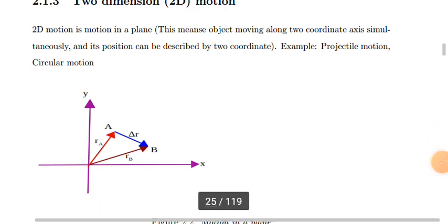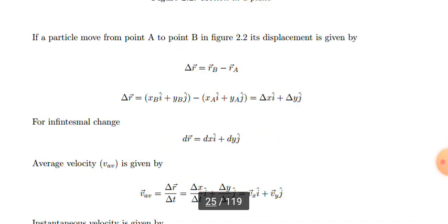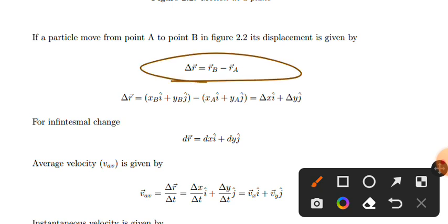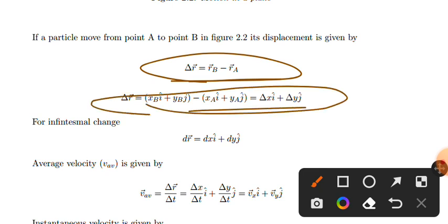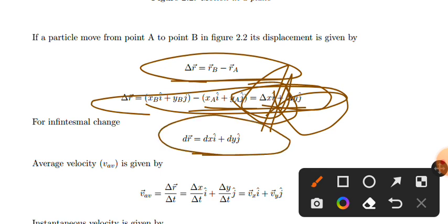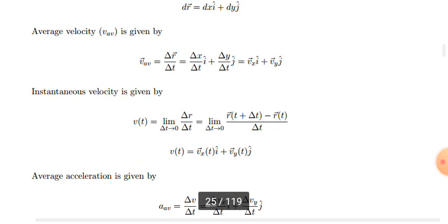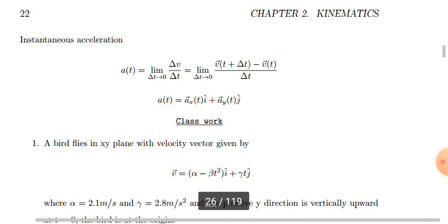In two-dimensional motion, the change in position vector equals final position minus initial position: change in r equals r_B minus r_A. This can be written as change in r equals change in x times i plus change in y times j. For infinitesimal change: dr equals dx i plus dy j.